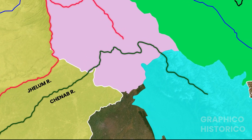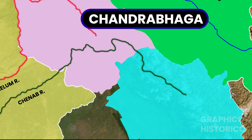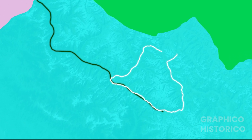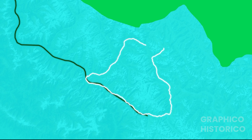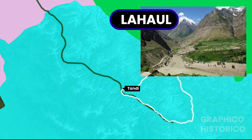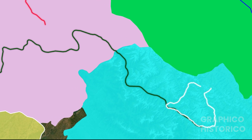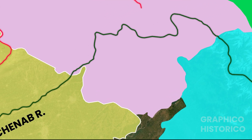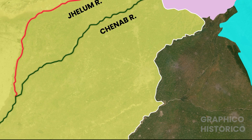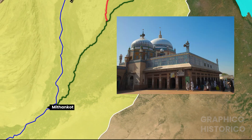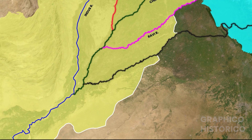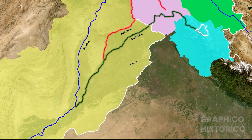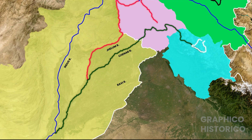Now, the Chenab river — called Chandrabhaga in Sanskrit. Two small streams, Chandra and Bhaga, originate near Bara Lacha La mountain pass and meet at Tandi in the Lahaul region of Himachal Pradesh, forming the Chenab river. It then flows through Jammu and Kashmir and enters Pakistan near Sialkot. It flows through Pakistan and meets the Indus river at Mithankot. Jhelum, Ravi, and Satluj rivers also meet the Chenab before its confluence with the Indus. The total length of the Chenab river is 974 km.